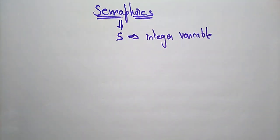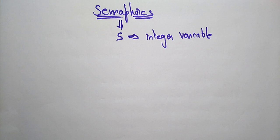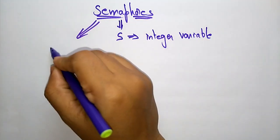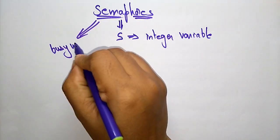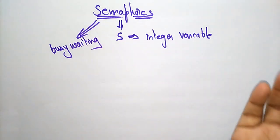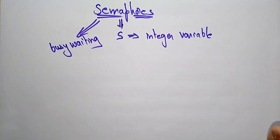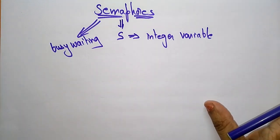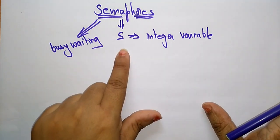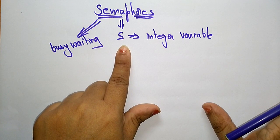Why are we using this integer variable and why are we calling this a semaphore? The semaphore is called a synchronization tool that does not require busy waiting. It does not want to maintain busy waiting. Whatever processor wants to enter into the critical section has to be executed without busy waiting. We take S as an integer variable which is used for the semaphore.